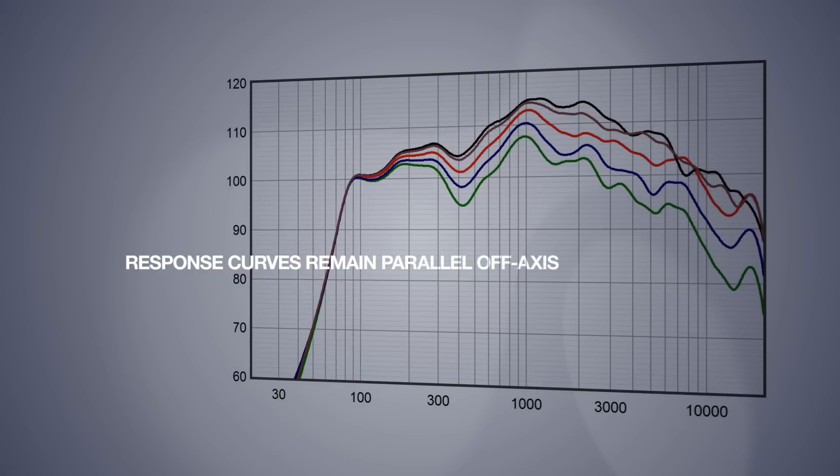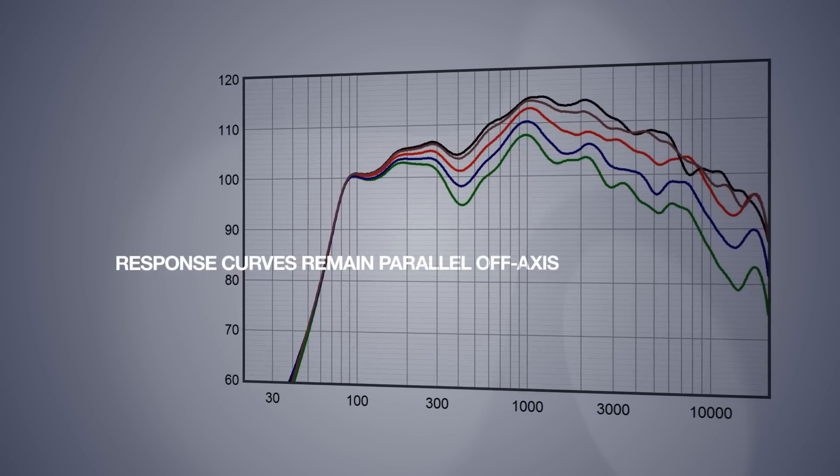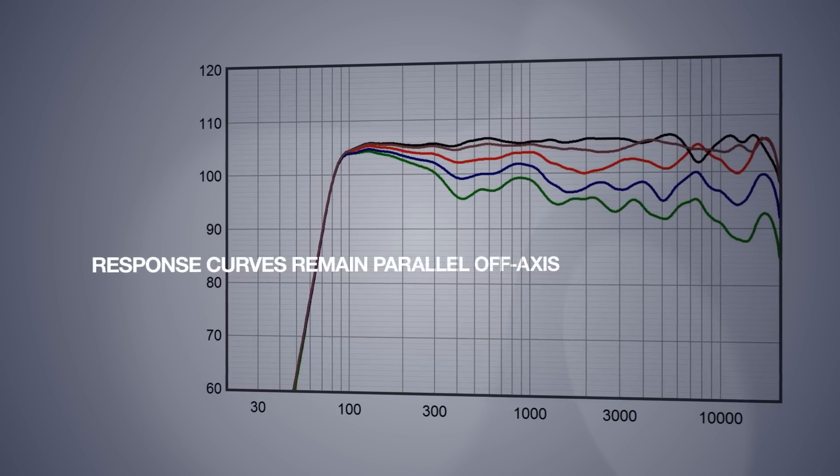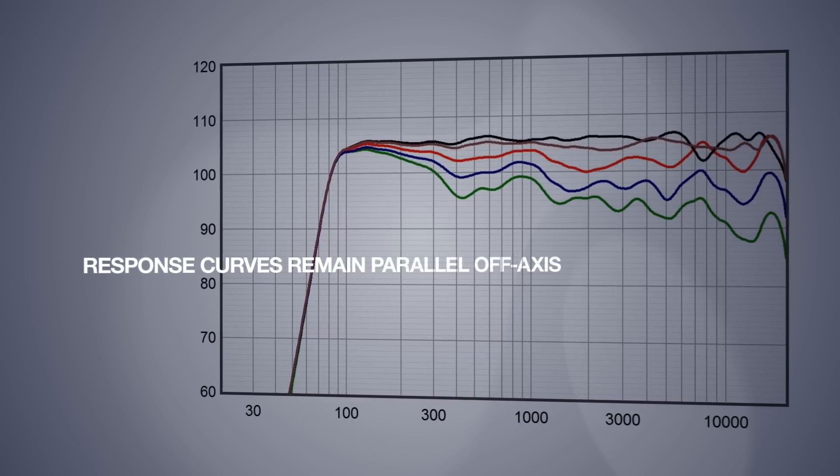If you try to create a passive crossover that produces a flat response, it's a very difficult thing to do, and it's even more difficult to do that and also have consistent directional response. Knowing that we have DSP available, we can release ourselves from the requirement of making it inherently flat. That allows us to keep efficiency very high, which reduces amplifier voltage swing, and allows us to design the crossover so that the off-axis response lines are parallel. Once you equalize that flat, you have both flat on-axis and parallel lines moving off axis.